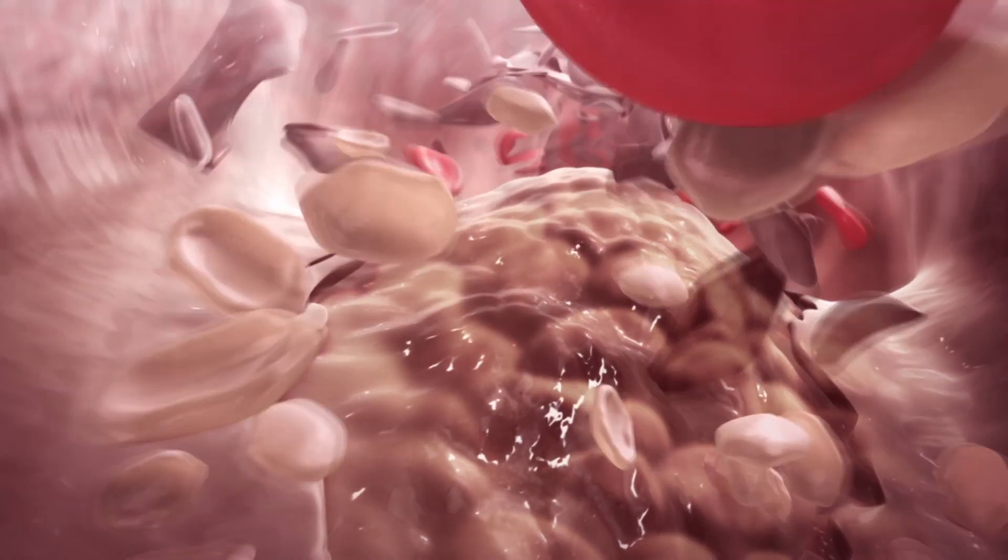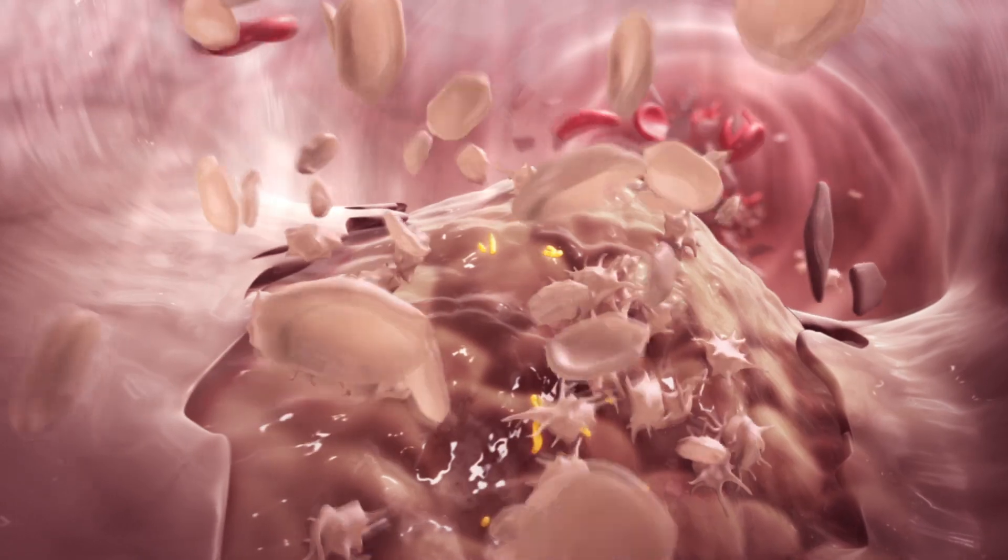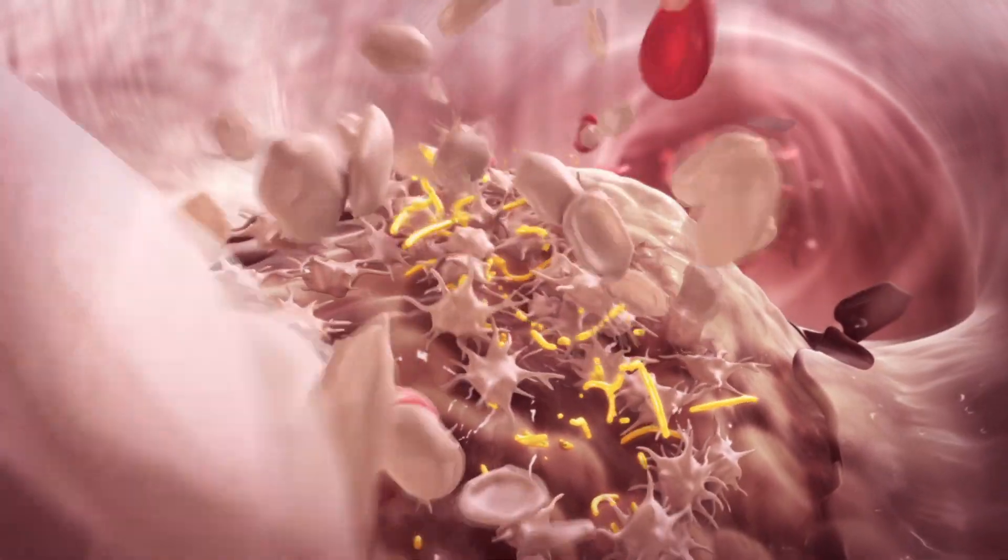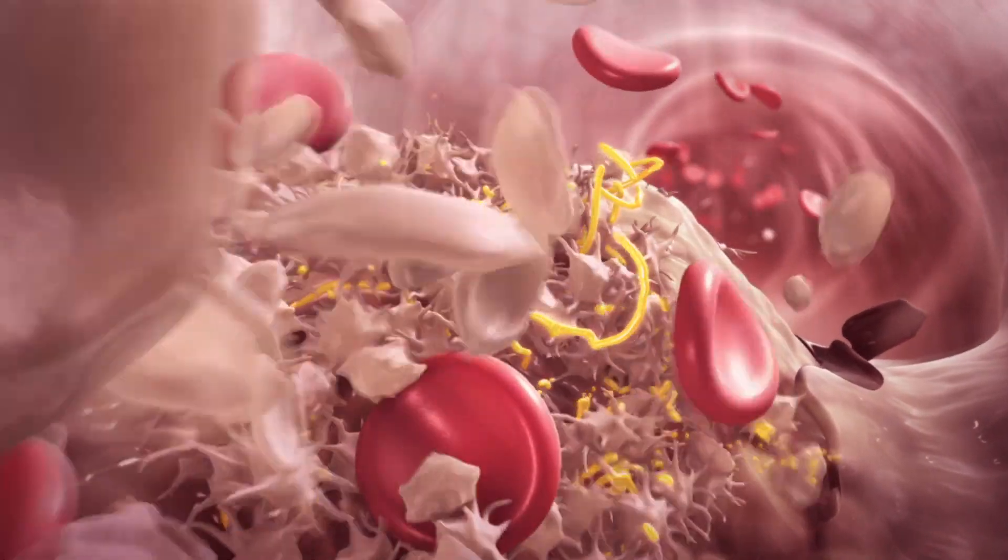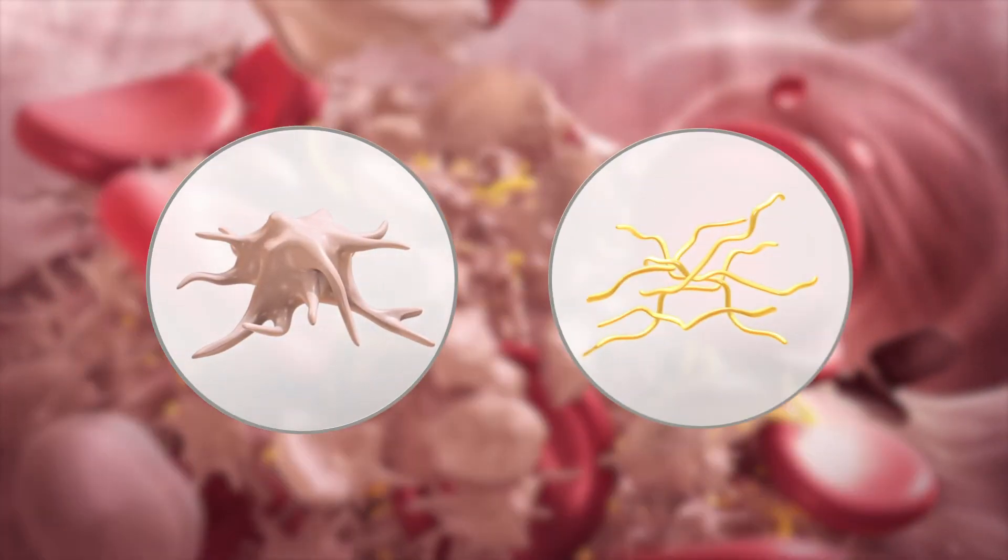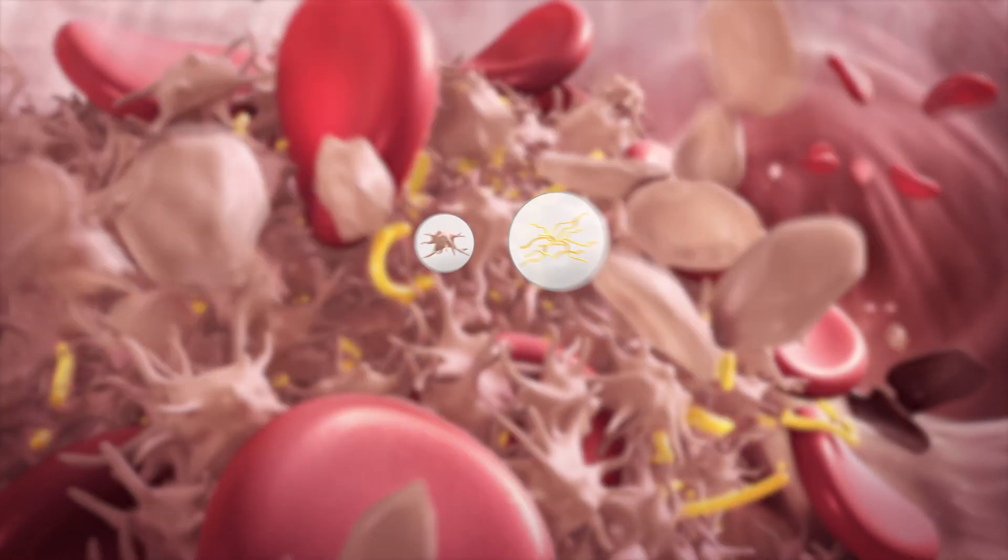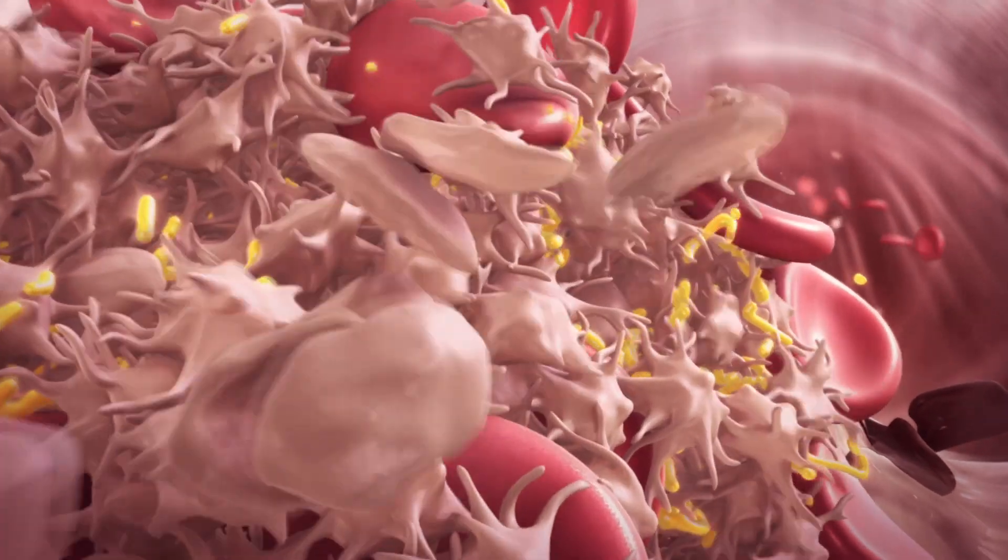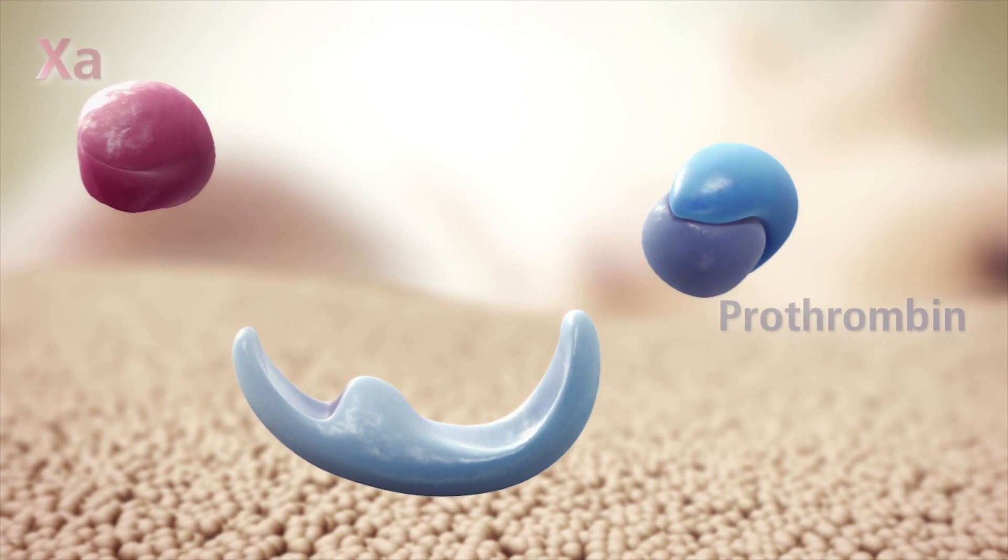When a plaque ruptures and a blood clot forms the threat of a vascular event becomes very real. Clots consist of activated platelets stabilized by fibrin strands. While activated platelets aggregate to seal the rupture site, fibrin formation is triggered by the coagulation cascade.